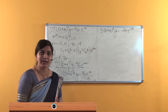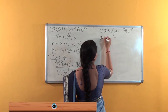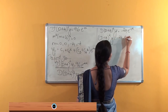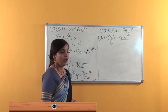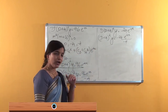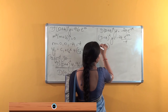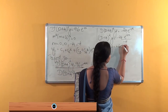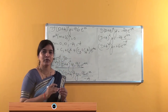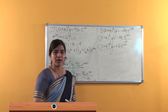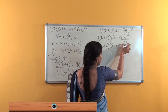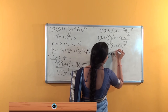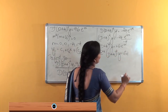Once again we integrate with respect to x. We get (D plus 4) whole squared into y equals minus 24 times e to the power minus 4x divided by minus 4, which simplifies to plus 6 e to the power minus 4x. Now we shift e to the power minus 4x to the other side: e to the power plus 4x into (D plus 4) whole squared into y equals 6.